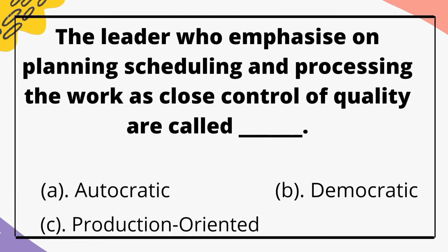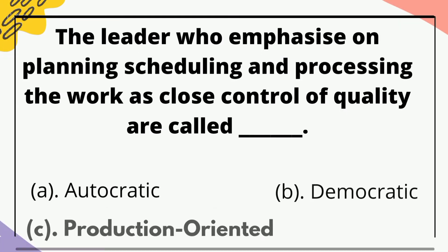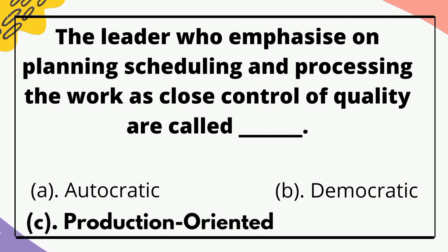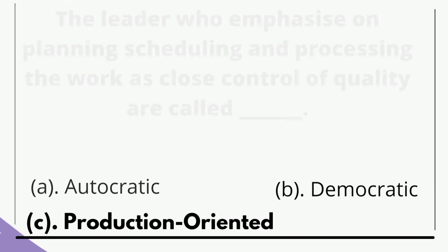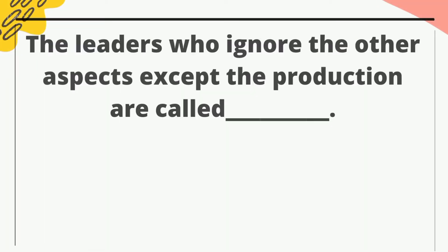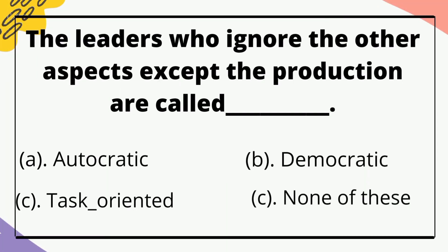The leaders who emphasize on planning, scheduling, and processing the work with close control of quality are called — the correct option is production oriented. The leaders who ignore all other aspects except the production are called — the correct option is task oriented.